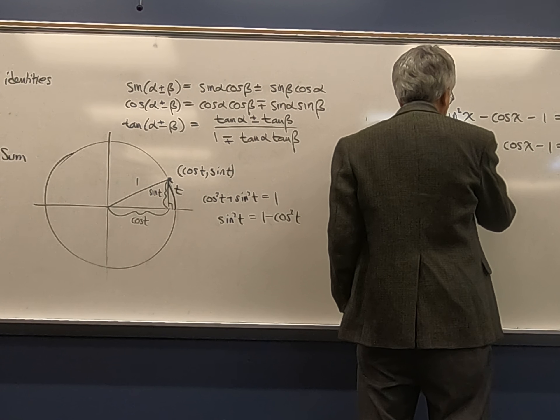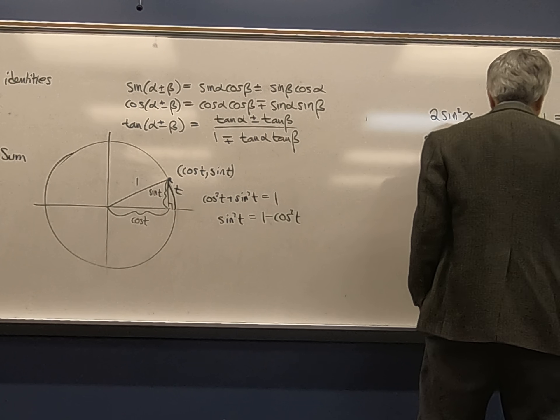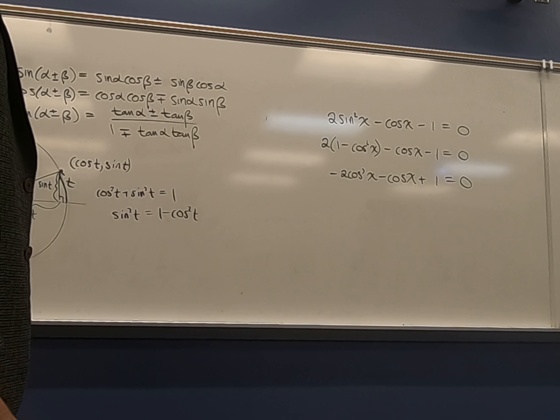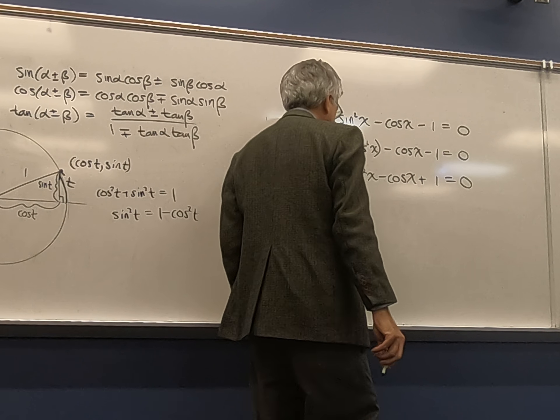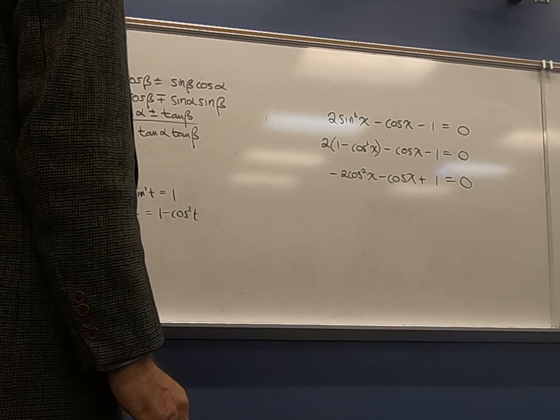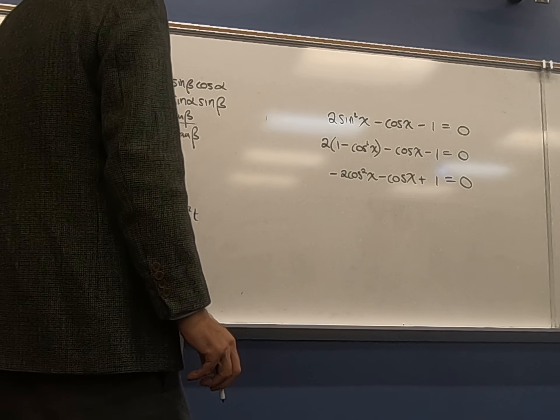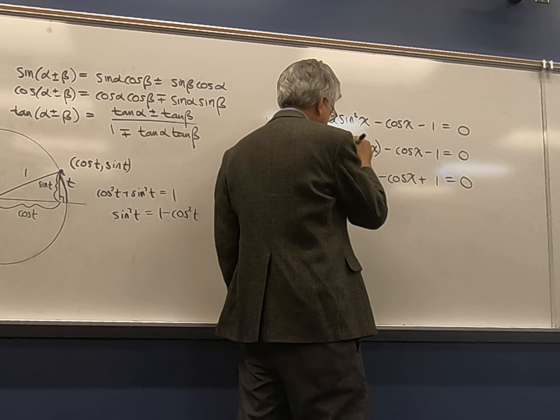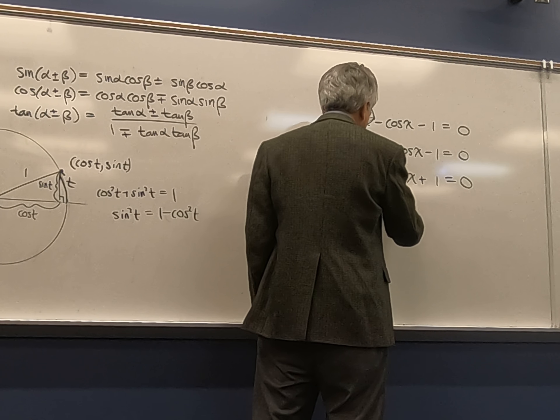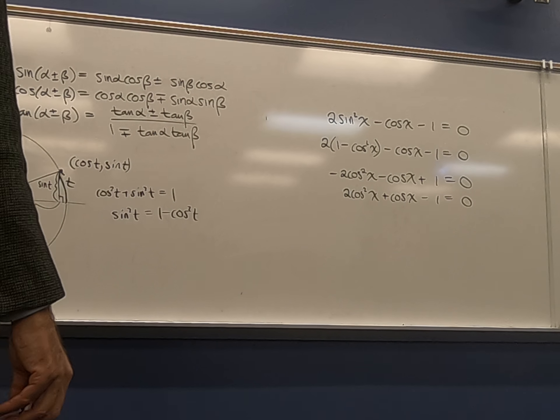So now this is negative two cosine squared x minus cosine x. Now, plus one equals zero? Minus... Well, two minus one is one, right? Yeah. That's a squared there. That's better. Now what? Substitute for you. Oh, yeah. I'd like my coefficient to be positive here. So I can just multiply both sides by negative one. And get an equivalent equation like this. Zero times negative one is still zero on the right side, right? So that's an equivalent equation.